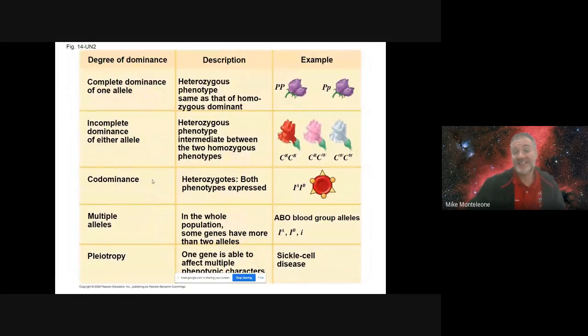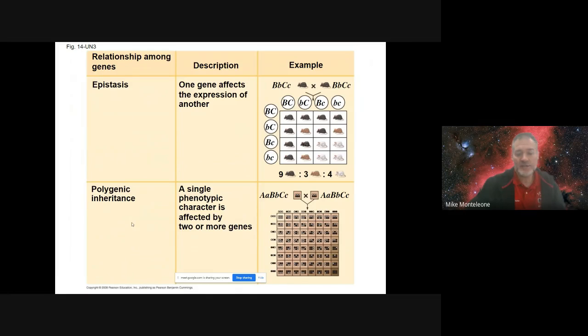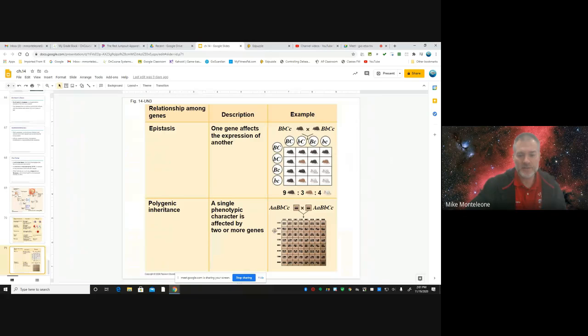All right, a nice summarizing diagram, right? Complete dominance, incomplete co-dominance, talked about multiple alleles in the case of blood typing, pleiotropy, epistasis, polygenic inheritance, all that good stuff. All right so this wasn't too bad. It's maybe a few minutes longer than I had hoped but not so bad. Hey guys, again if you have any questions about any of this, please email me, book some time, ask in class, and I will see you next time.